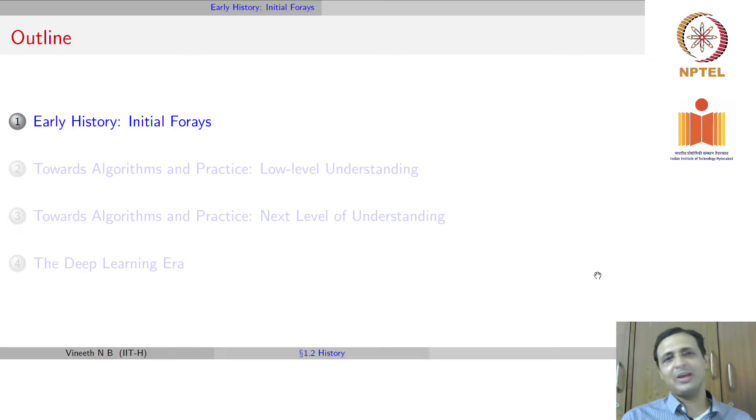We will briefly describe very initial forays in the field in the 50s, 60s and 70s. Then we will talk about efforts that contributed to low level understanding of images in the 80s. Then high level understanding that the community took up in the 90s and 2000s, and of course, we will cover a brief history of deep learning in the last decade.